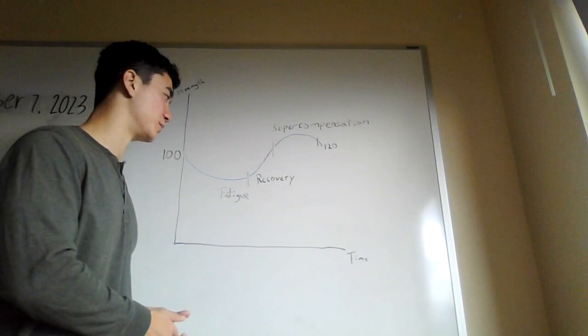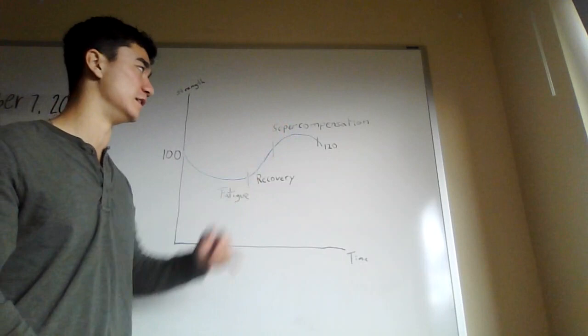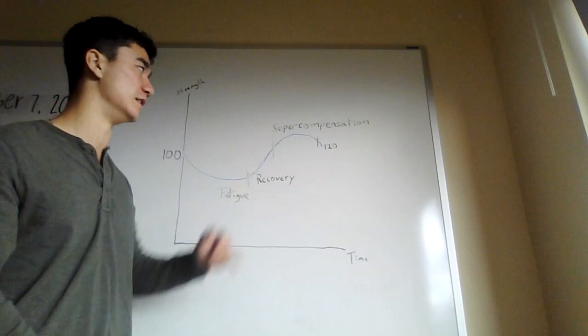Once you reach this point at the end of a program where your new bench press max is 120 pounds, at that point you could run this program again—go through a fatigue phase with a lot of reps and a lot of sets with lighter weight so then you can slowly go into the recovery phase and slowly go to super compensation phase, and do this cycle over and over and over again until you become the strongest version of yourself possible, or at least become stronger than person A.